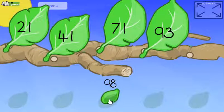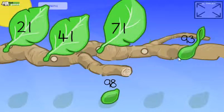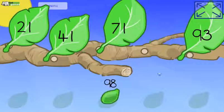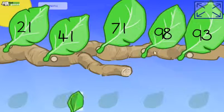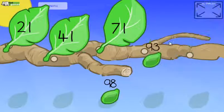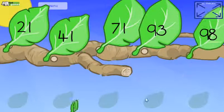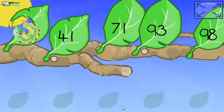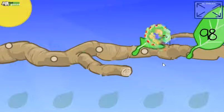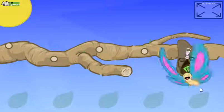Let me get it wrong on purpose so you can see — you put them in the wrong order, and you can drag them off, swap them around, put them back. Then the caterpillar eats all the leaves if you've got it right, and it turns into a little chrysalis.